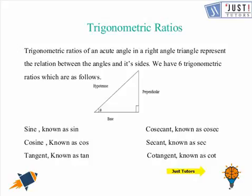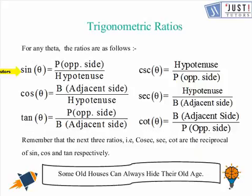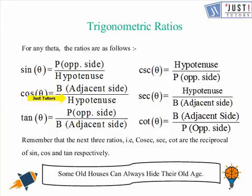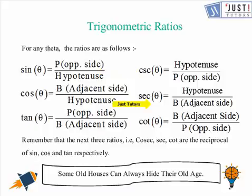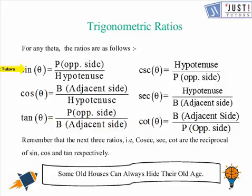Now let us learn about the ratios of these values. Sine theta can be understood as opposite side upon the hypotenuse. Likewise for cos, we have adjacent side upon the hypotenuse, and tan is equal to opposite side upon the adjacent side. For cosec, it is hypotenuse upon the opposite side. For sec, it is hypotenuse upon the adjacent side, and for cot, it is the adjacent side upon the opposite side. If you notice, cosec, sec, and cot are just the reciprocals of sine, cos, and tan respectively.